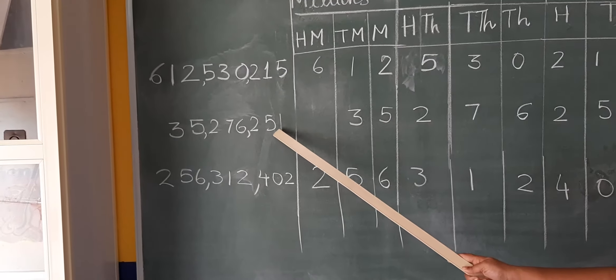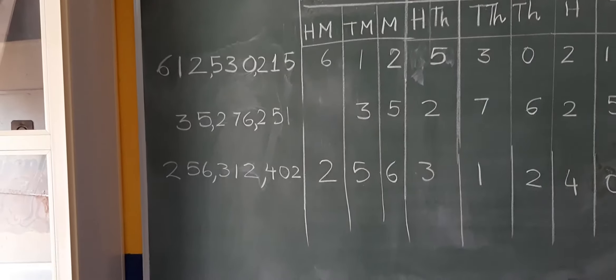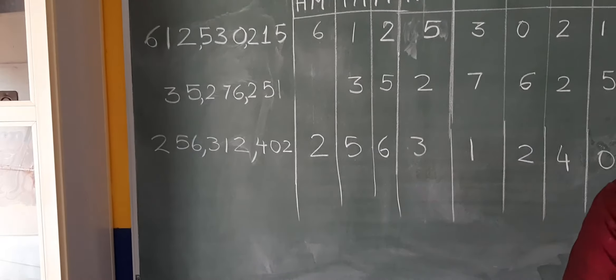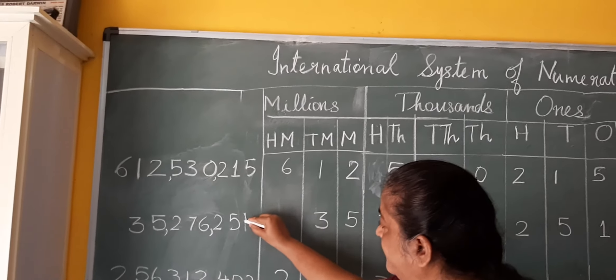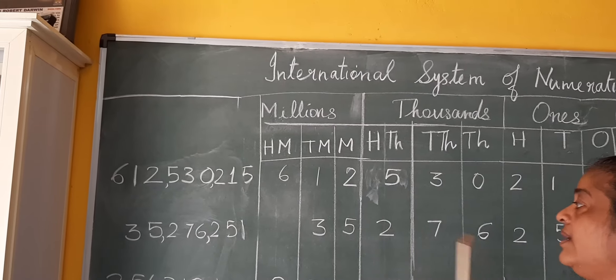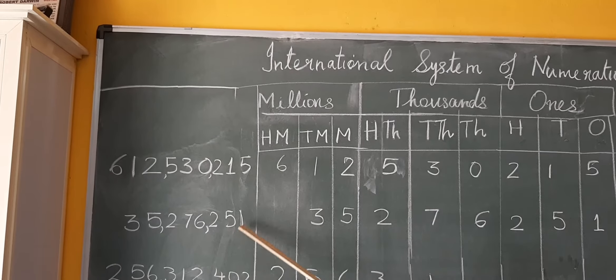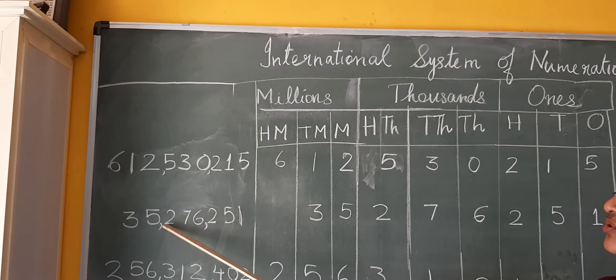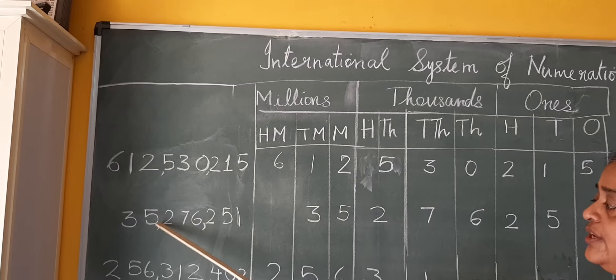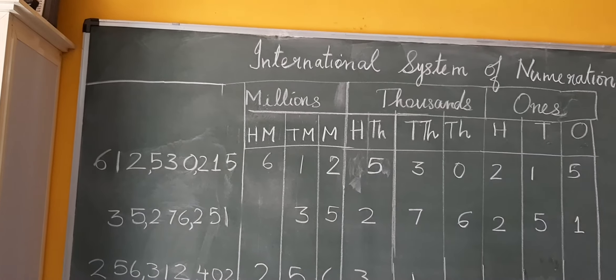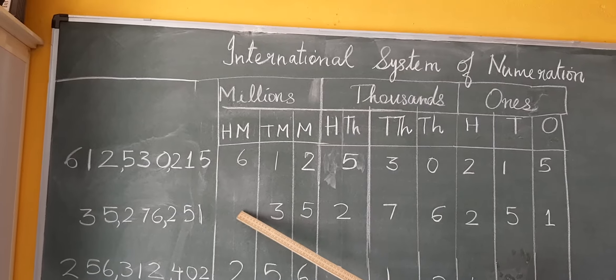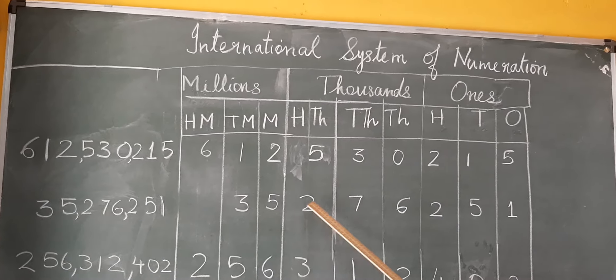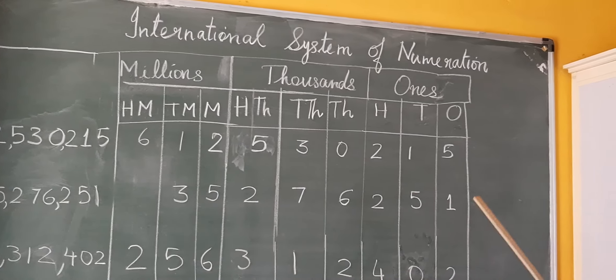You put a comma after the first three digits: 2, 5, 1. Then another comma after 6, 7, 6. Then 3, 5. I have left the hundred millions place blank because there is no digit here. So we have 35, 276, 251.